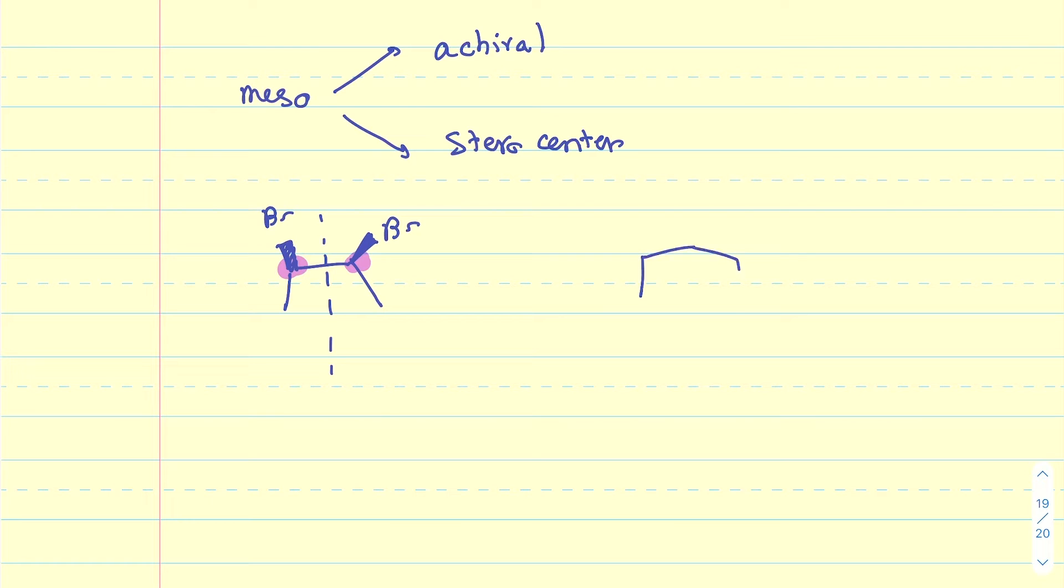Let me show an example of a compound that a lot of people would think is meso, but it's not. Say for instance, this compound. Now this compound is achiral because it does have a plane of symmetry, but it lacks stereocenters.